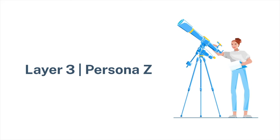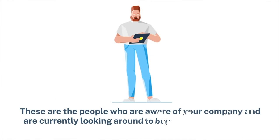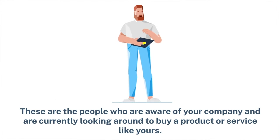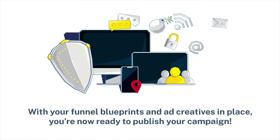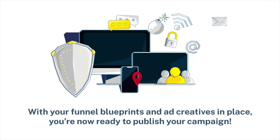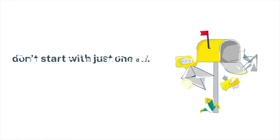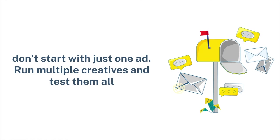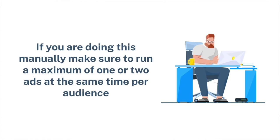Layer 3, Persona Z: Welcome to the last stop before conversion — this is your low-hanging fruit. These are the people who are aware of your company and are currently looking around to buy a product or service like yours. With your funnel blueprints and ad creatives in place, you are now ready to publish your campaign. Don't start with just one ad — run multiple creatives and test them all. If you are doing this manually, make sure to run a maximum of one or two ads at the same time per audience.